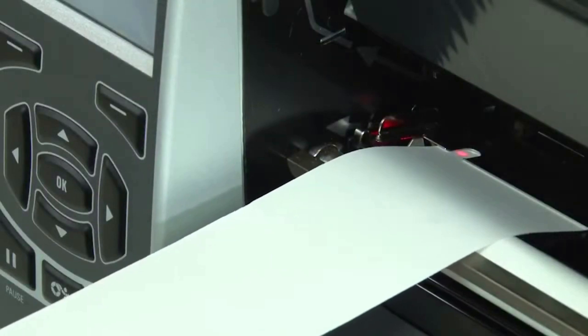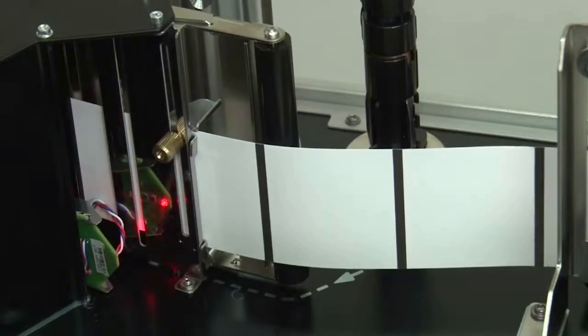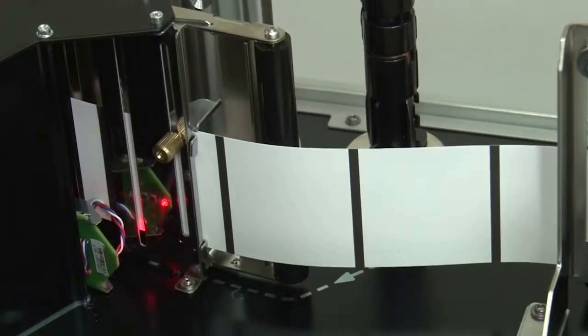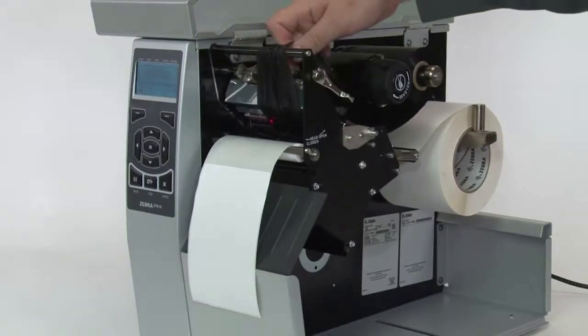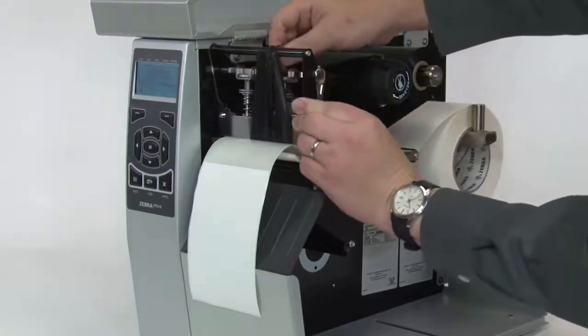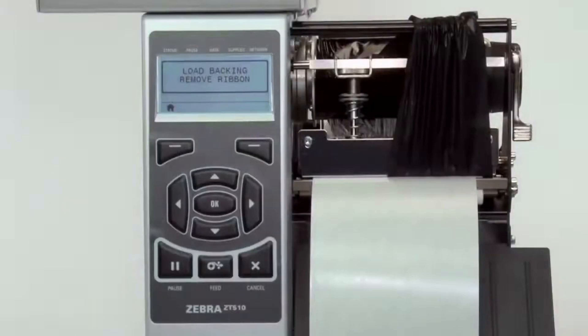If your media has a black mark on the underside of the media, please ensure that the black mark is not over the mark sensors. If you are using ribbon, the ribbon must be removed from the ribbon sensor location on the inboard side of the printer. Close the printhead. When you have completed these steps, press the pause button to continue.